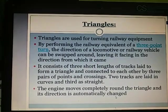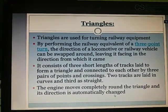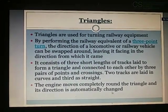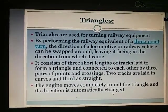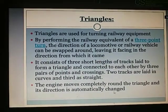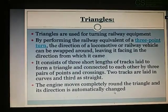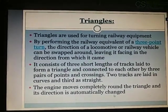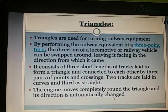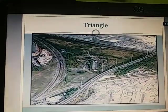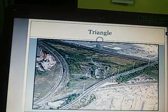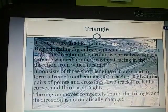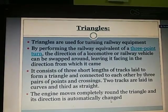Triangle: Triangles are used for turning railway equipment by performing the railway equivalent of a three-point turn — the direction of a locomotive or railway vehicle can be swapped around, leaving it facing the direction from which it came. It consists of three short lengths of tracks laid in the form of a triangle, connected by three pairs of points and crossings. Two tracks are laid in curves and the third as straight. The engine moves completely round the triangle and its direction is automatically changed.